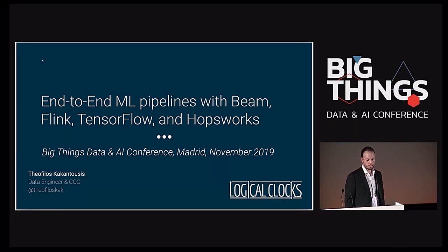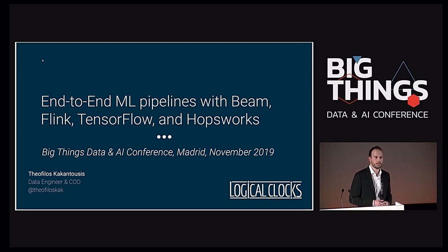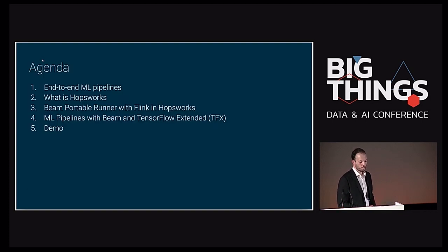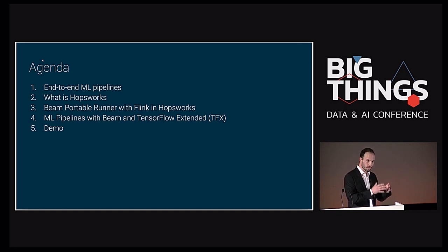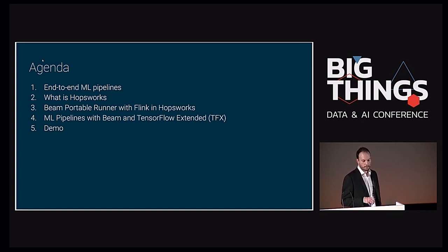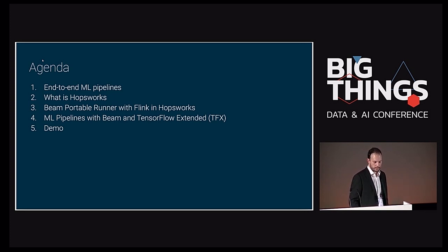Today we're going to hear about how to build end-to-end machine learning pipelines with a different set of open source technologies: Apache Beam, Apache Flink, TensorFlow, and HopsWorks. HopsWorks is the open source machine learning platform we are developing at LogicalClocks. We're going to learn about end-to-end ML pipelines, what HopsWorks is, what Apache Beam Portable Runner brings, how we run it with Flink on HopsWorks, how we build ML pipelines with TensorFlow Extended, and we will finish with a short demo.